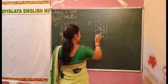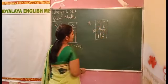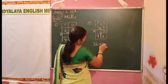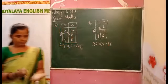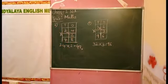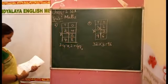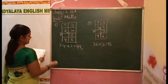Next, three threes are nine. Now thirty-two into three equal to ninety-six. Next, D.